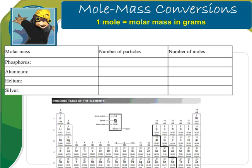Mole-mass conversions include the addition of a new conversion factor. This new conversion factor is that one mole also equals the molar mass of a substance in grams. So what exactly does that mean and where do I find that molar mass in grams? The answer is on the periodic table — that's where you find the amount of grams of something.